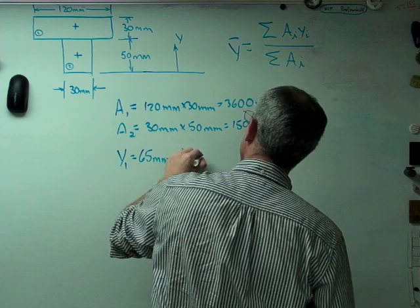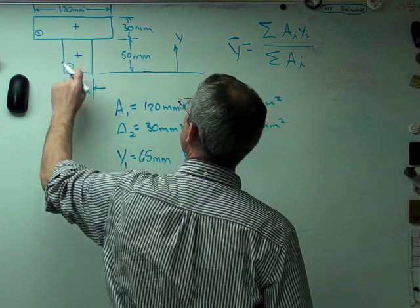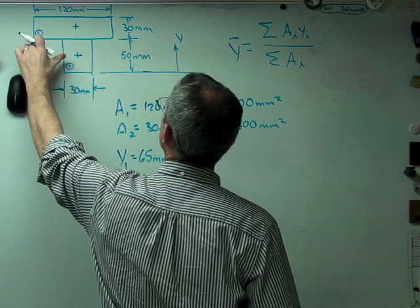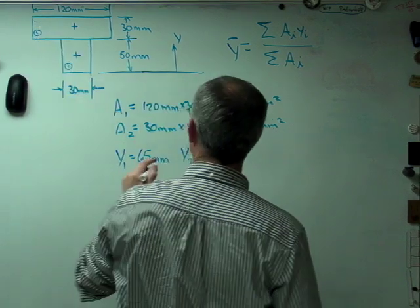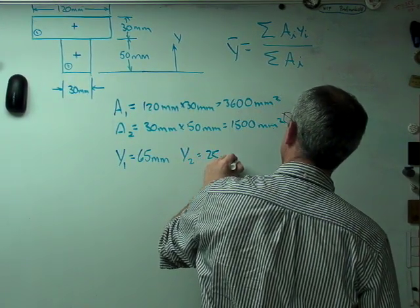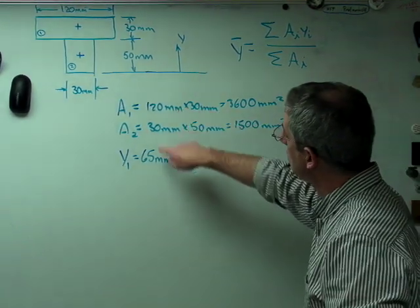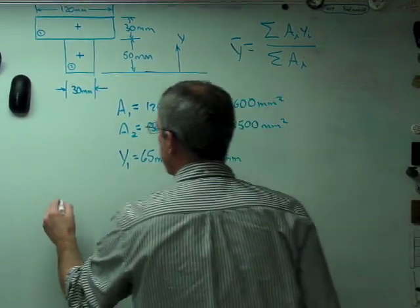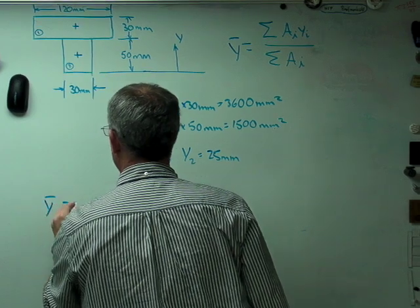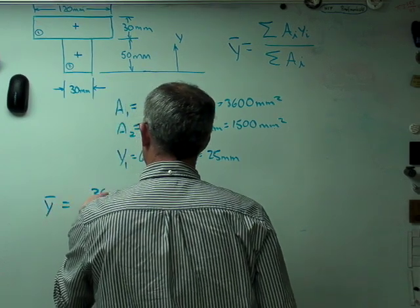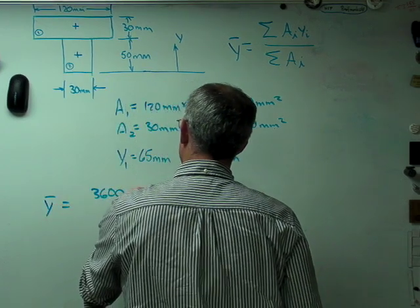Y2 is a little easier. That's just the distance from the bottom of the shape to the centroid of box number 2, which is 25 millimeters. No problem. All we've got to do now is plug those numbers into that expression.